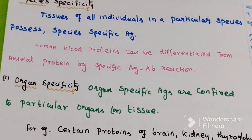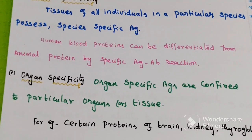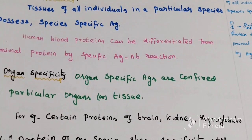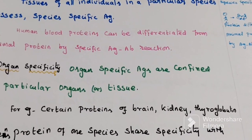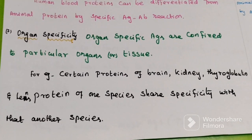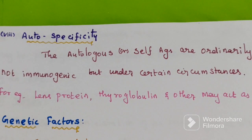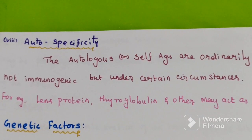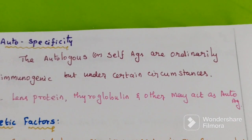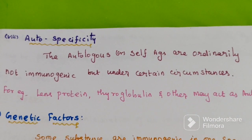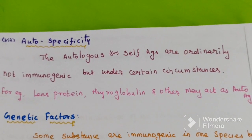The seventh factor is organ specificity. Organ-specific antigens are confined to a particular organ or tissue. For example, certain proteins of the brain, kidney, thyroglobulin, and lens protein of one species share specificity with those of another species. The eighth factor is autospecificity. Autologous or self-antigens are ordinarily not immunogenic, but under certain circumstances — for example, lens protein, thyroglobulin, and others — they may act as autoantigens.